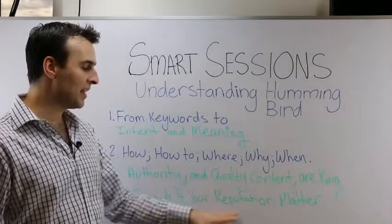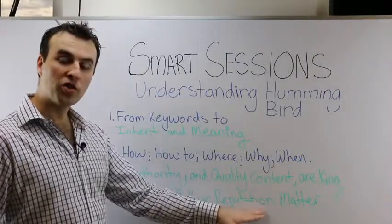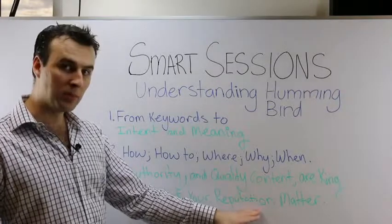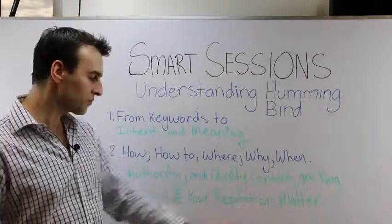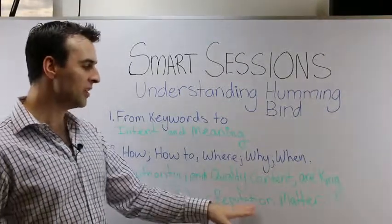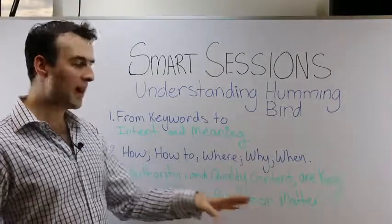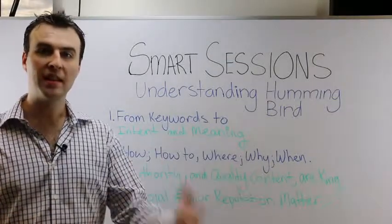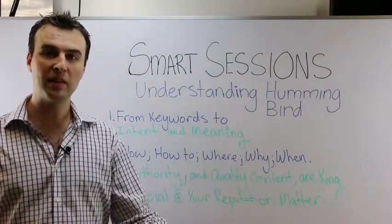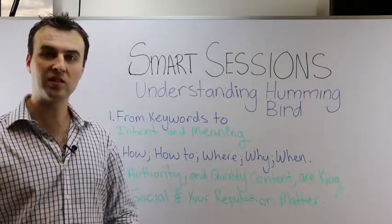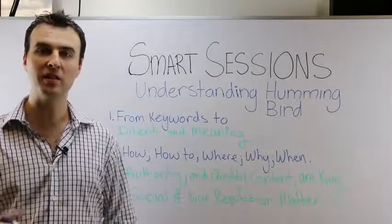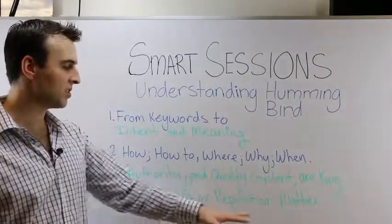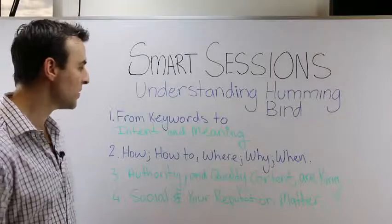This is also about linking your REL authorship — getting your Google Authorship and Google Publisher set up. Both are very, very important. This allows Google to see all the content you're publishing, the people that are linking to it, how often it's being shared and commented on, and how authoritative it is. This is going to be very important in Hummingbird.